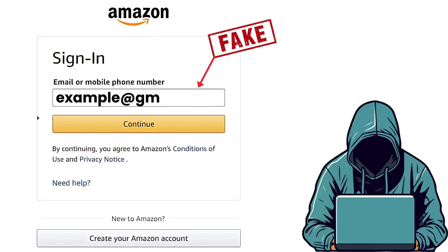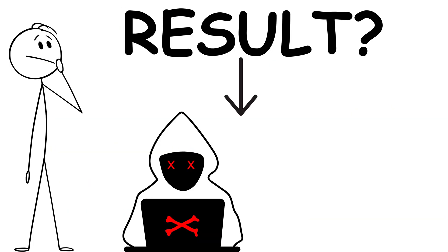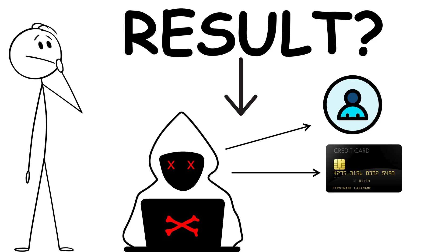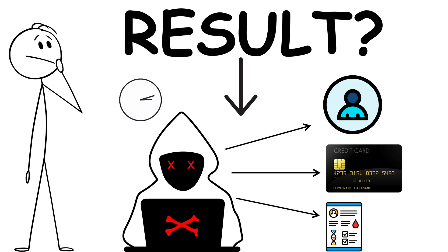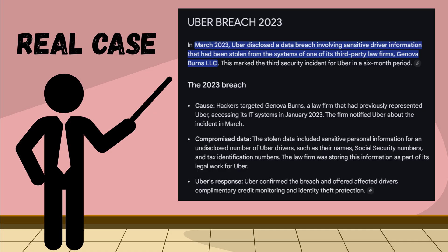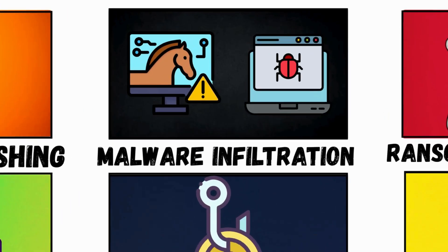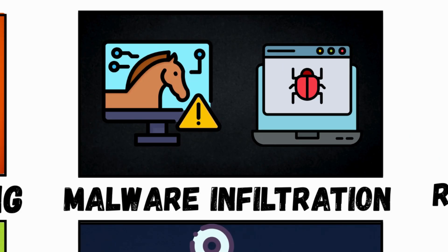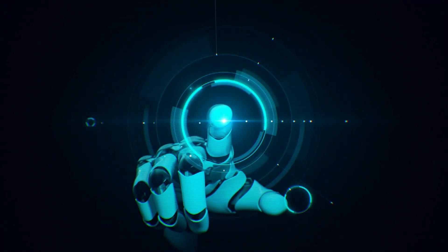You enter credentials on a perfect clone of Amazon's site. Result: hackers access your accounts, linked cards, and personal data in seconds. Real case: the 2023 Uber breach started with one phishing text to an employee.